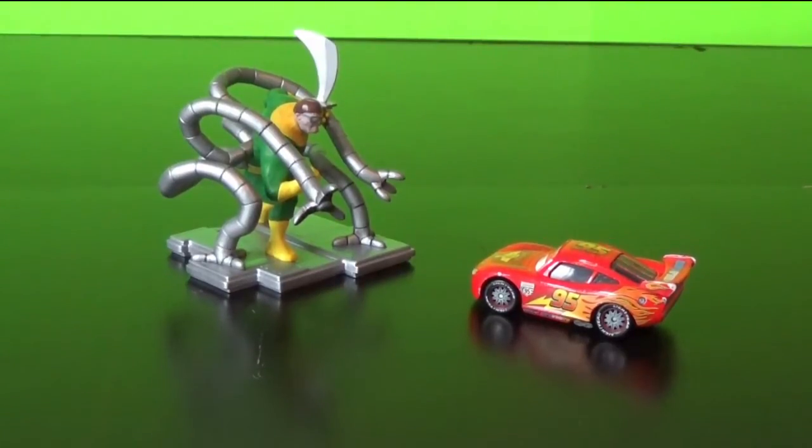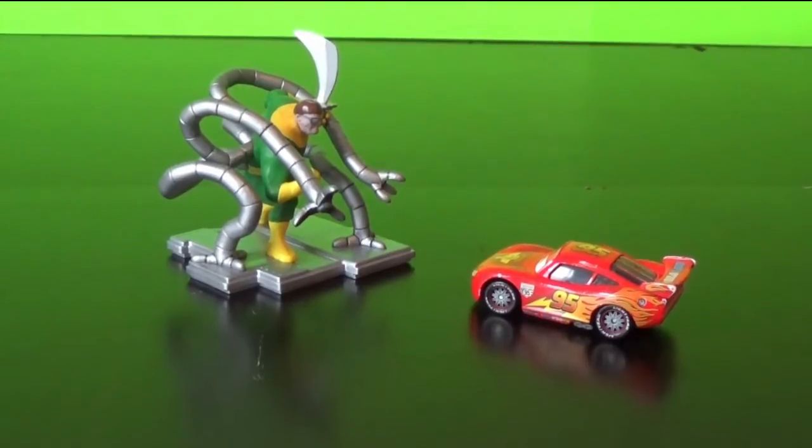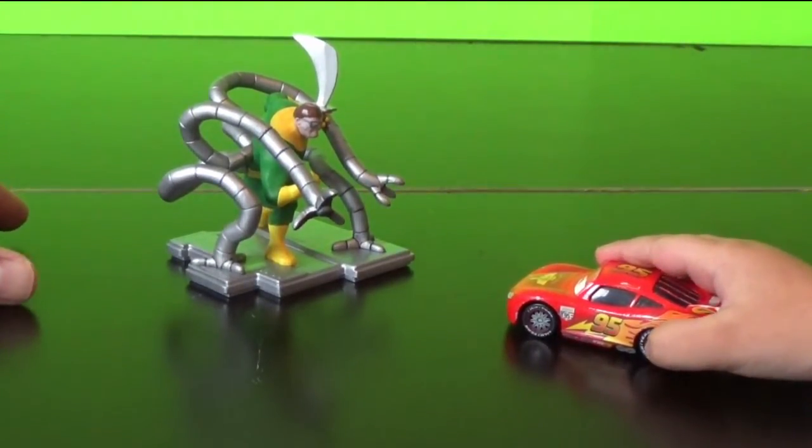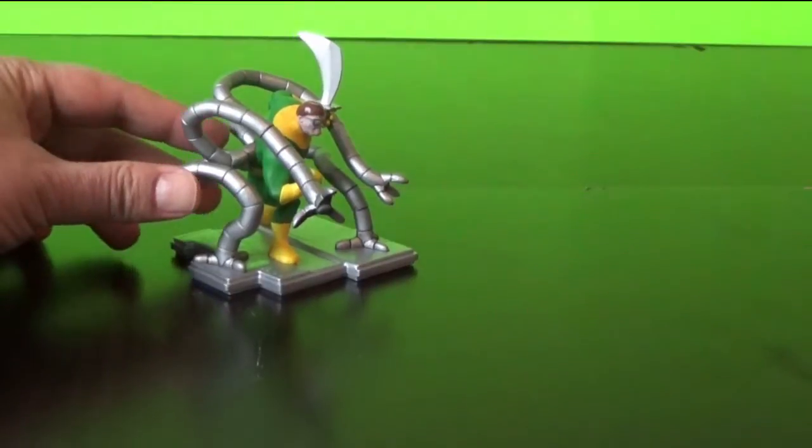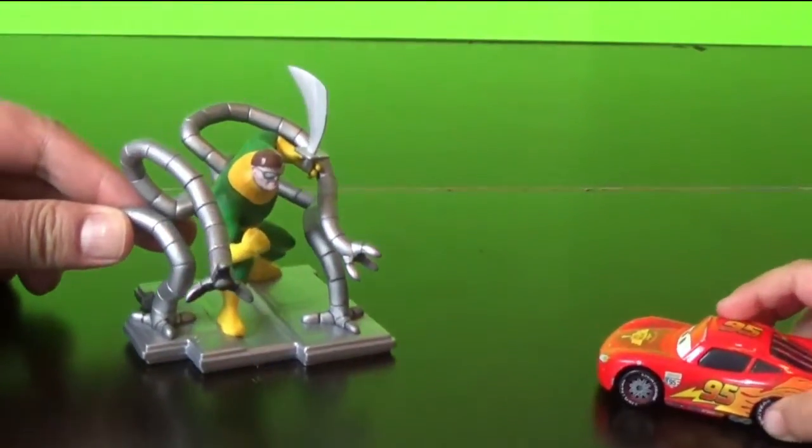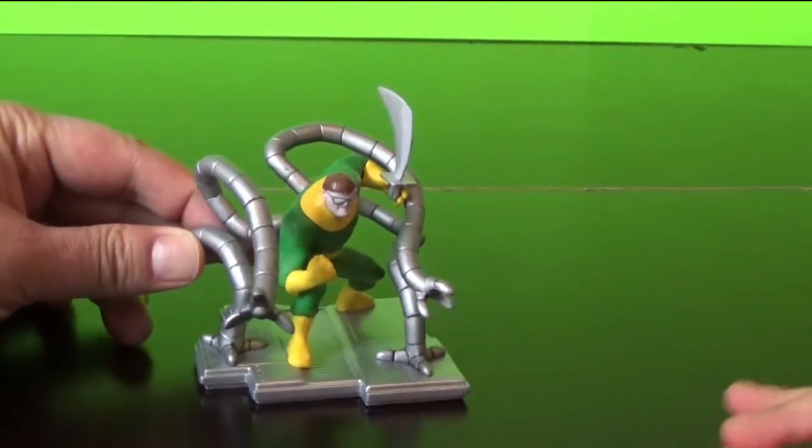Dr. Octopus, what are you doing here? McQueen, I'm gonna fight with you. McQueen, I'm gonna take all your powers from your car. And I got a sword too. Look at my sword. It's a big sword.